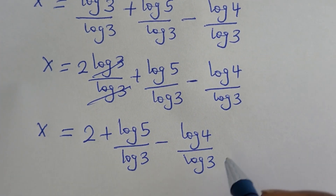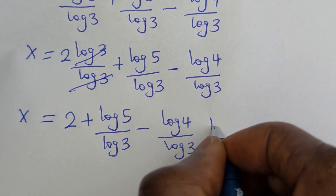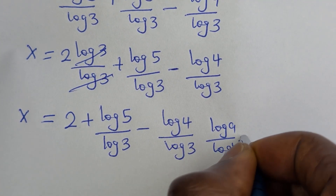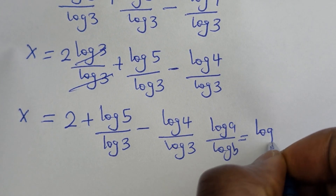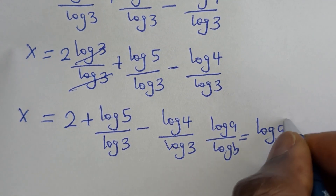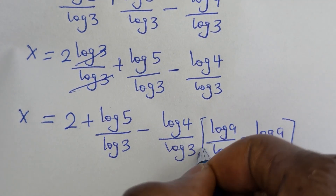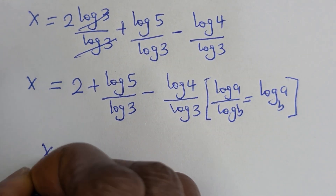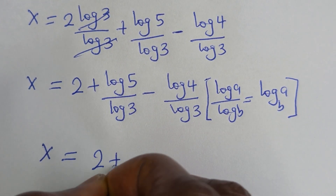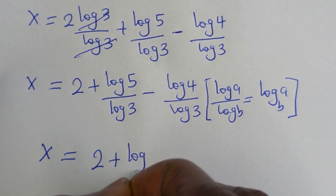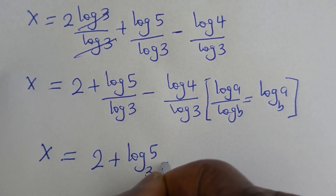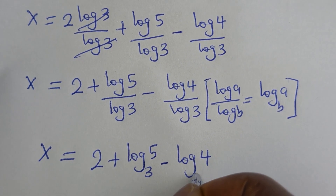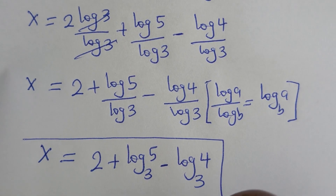Take note that if you have log A over log B, this is equal to log base B of A. So this becomes S is equal to 2 plus log 5 base 3, minus log 4 base 3. This is the final answer.